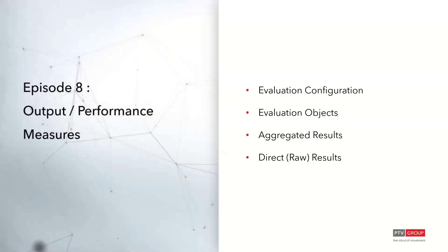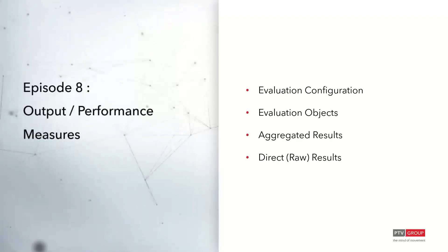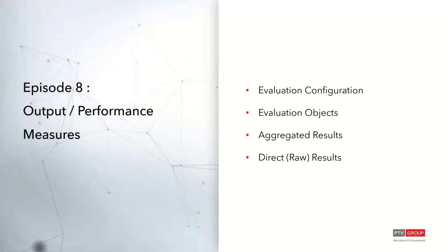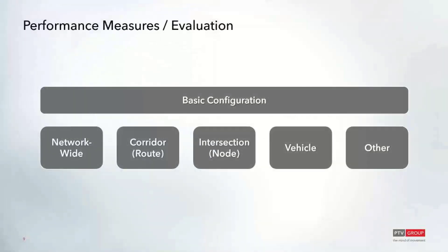Up until this point over our last seven sessions, we've covered most of the setup required to actually do the creation and building up of networks and running the simulation. Today we're going to start discussing some of the different performance measures within Vissim, how to configure those to record data and set up those objects, and then also how to view and access those results. We'll go through network-wide measures, corridor and intersection measures, vehicle evaluations, and a few others.